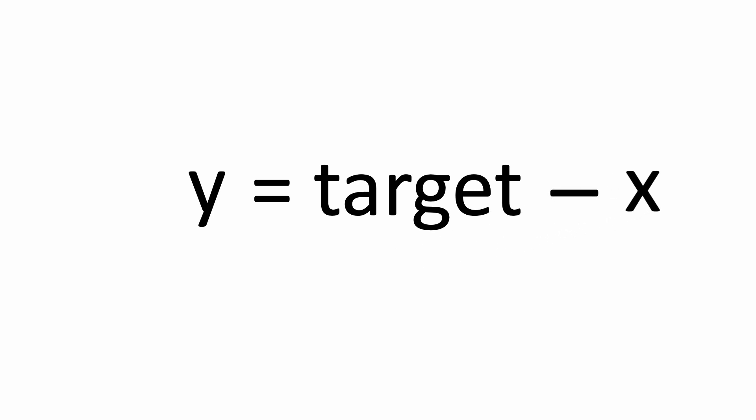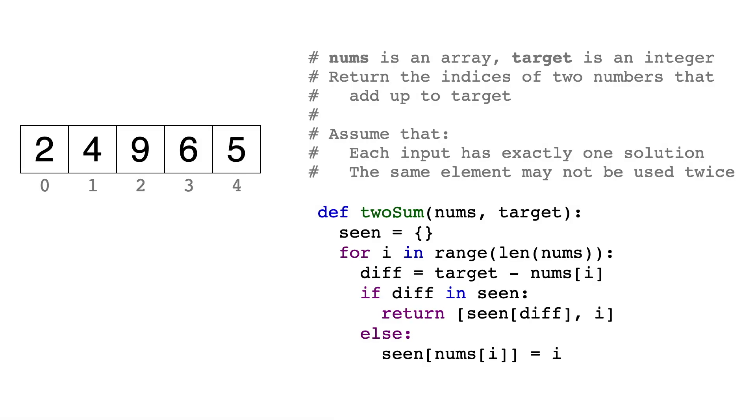We can use this fact and combine it with a hash table, which can look up values in constant time, to now devise an algorithm that only has to traverse the array once. Now let's look at the code and see how this is implemented.